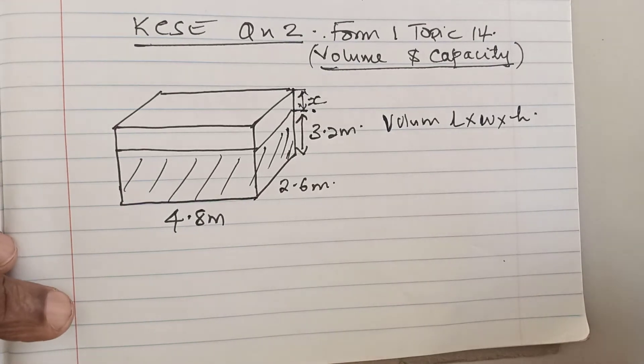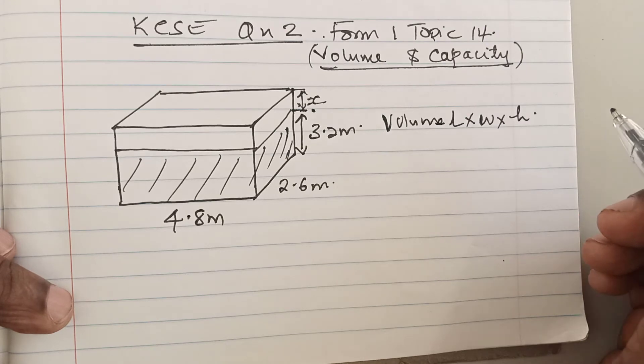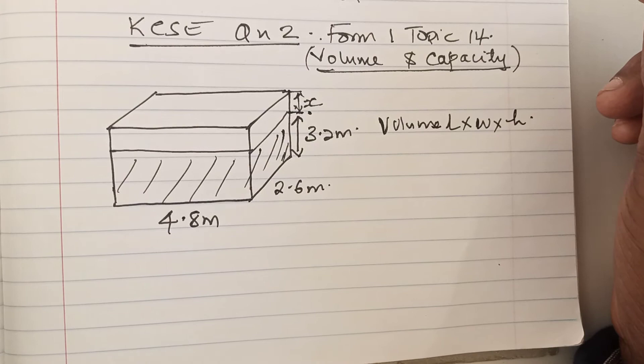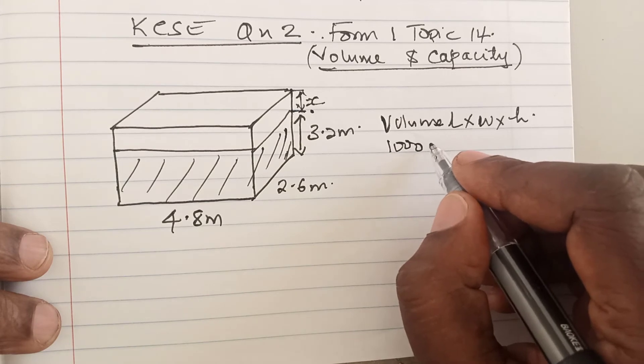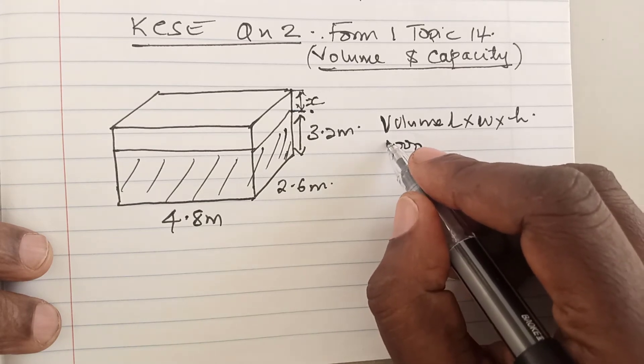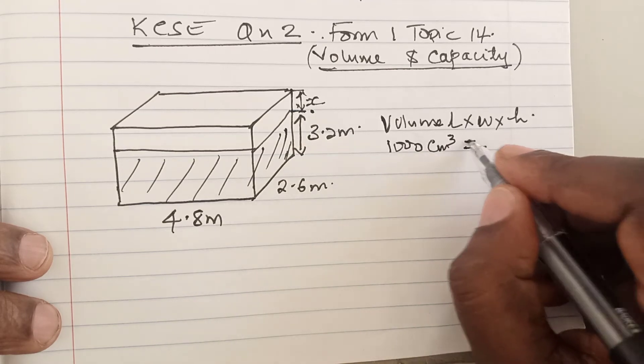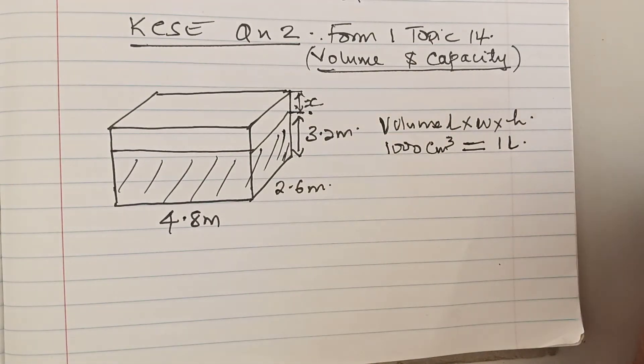Allow me to say that the dimensions given here are in meters, and I would wish to convert them to centimeters. Because I know when I get the volume in centimeters cubed, it is easier for all of us to convert that volume into liters. Because we know 1000 centimeters cubed equals 1 liter.